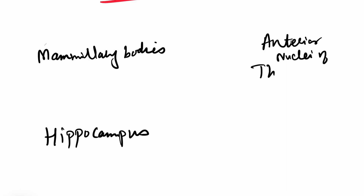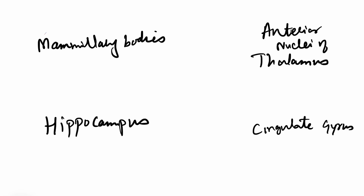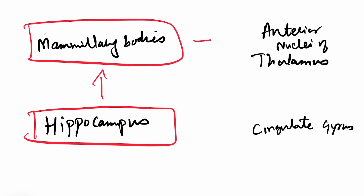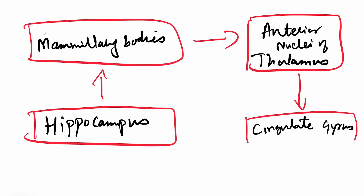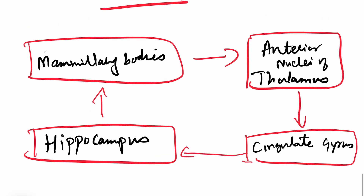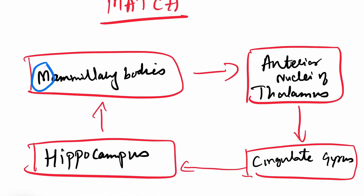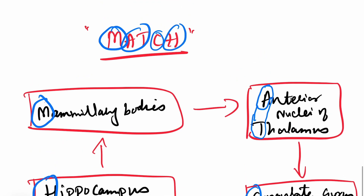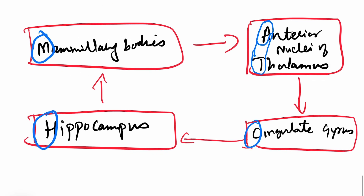From the anterior nuclei of the thalamus it will go to the cingulate gyrus. So you have to remember this mnemonic MATCH: M from mammillary body, A and T from the anterior thalamic nuclei, C from cingulate gyrus, and H from hippocampus. So MATCH — M from mammillary body, AT from anterior nuclei of the thalamus, C from cingulate gyrus, and H from hippocampus.